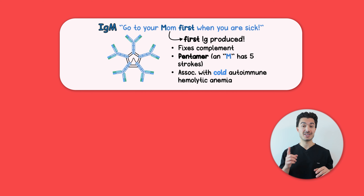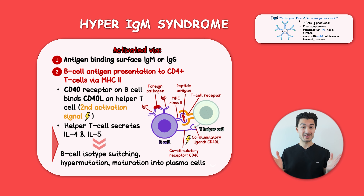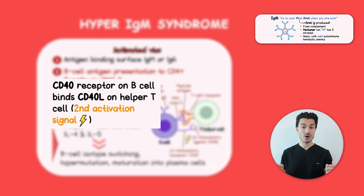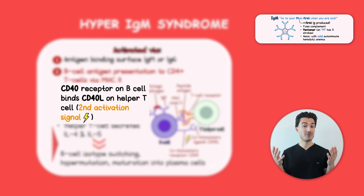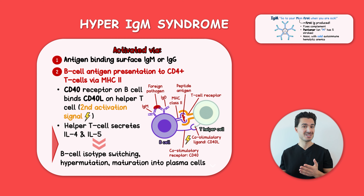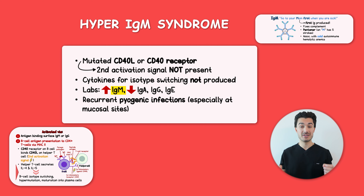Hyper IgM syndrome is due to a deficiency in CD40 ligand on your TH CD4-positive T cells. Due to this deficiency, there's less binding to CD40 on your B cells, which acts as a co-stimulatory signal. Without this signal, you don't get differentiation into other immunoglobulin isotypes. So patients with hyper IgM syndrome only have IgM and are susceptible to recurrent pyogenic infections.